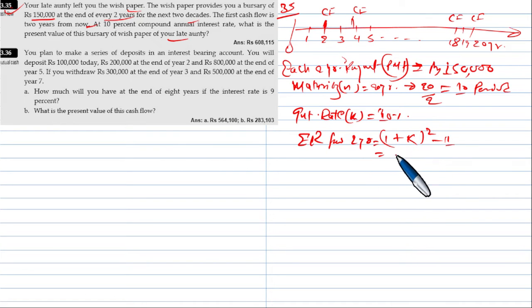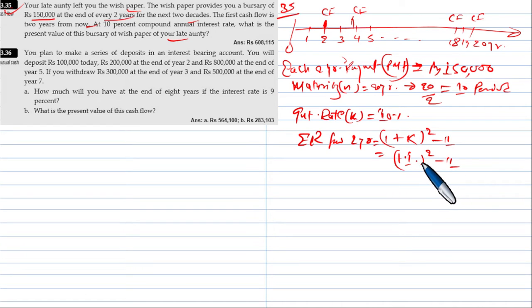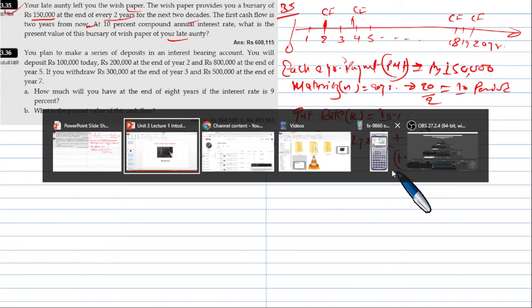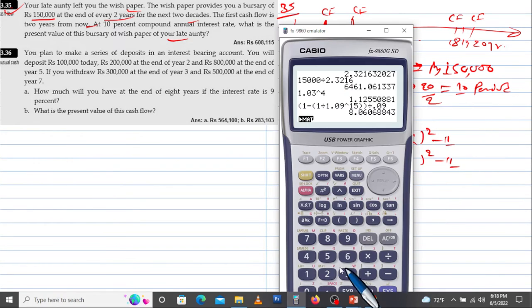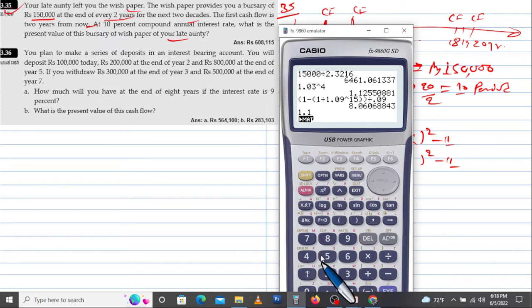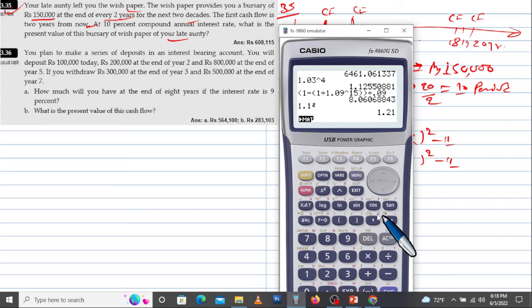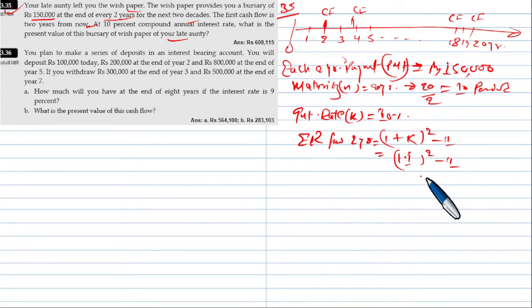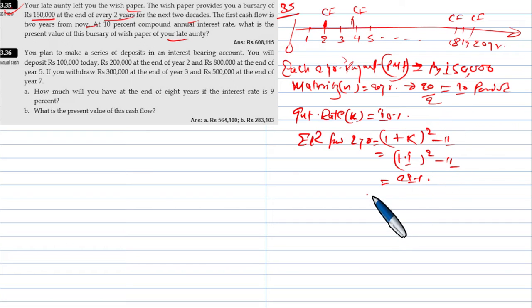That is equal to 1.1 to the power 2, minus 1. 1.1 squared gives us an effective two-year rate equal to 21 percent.